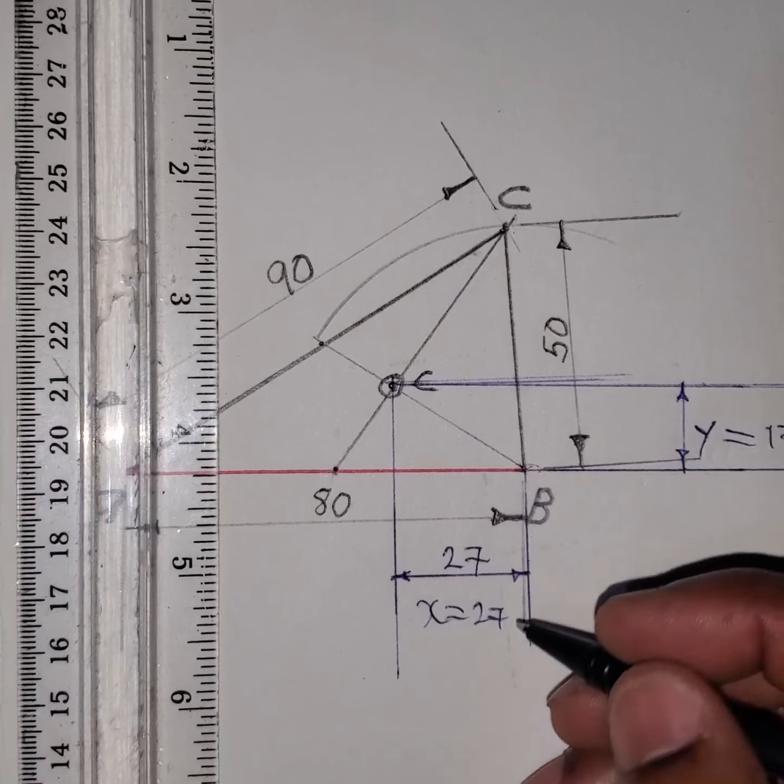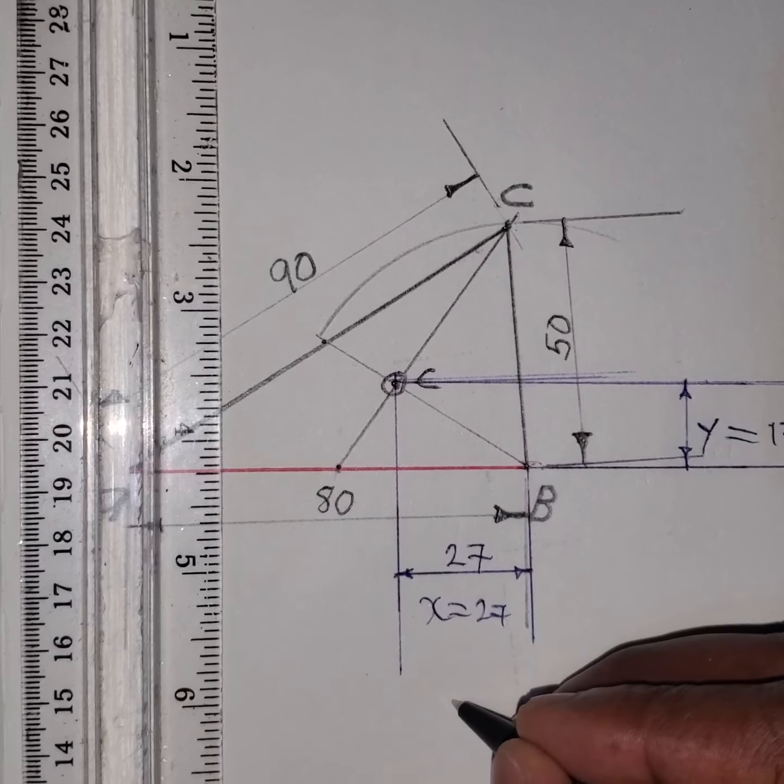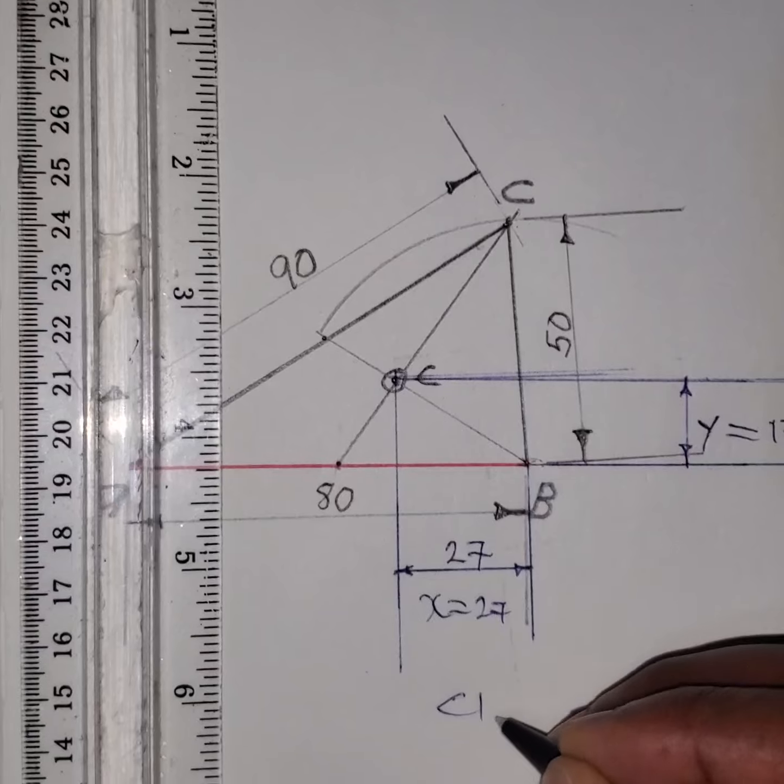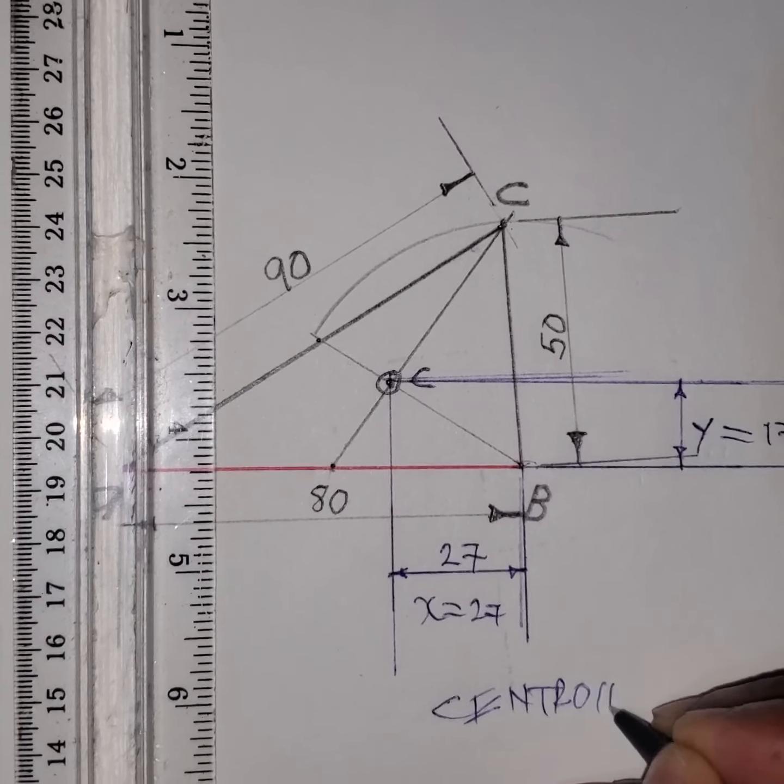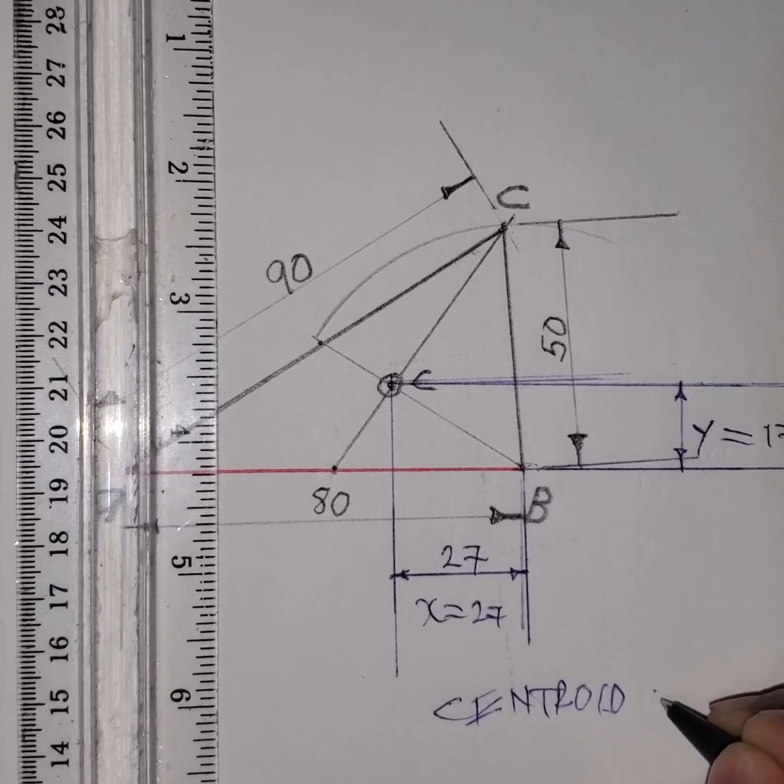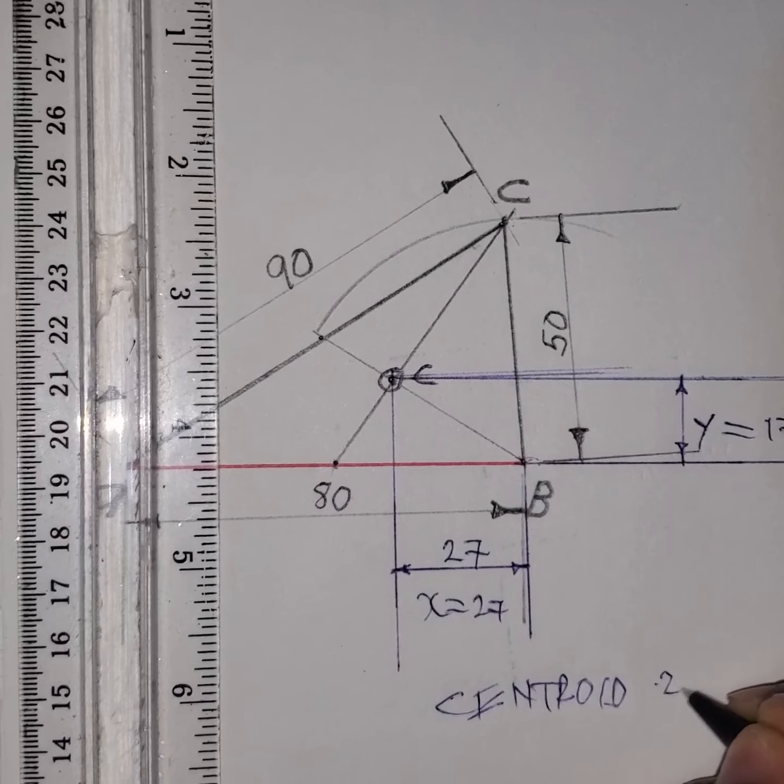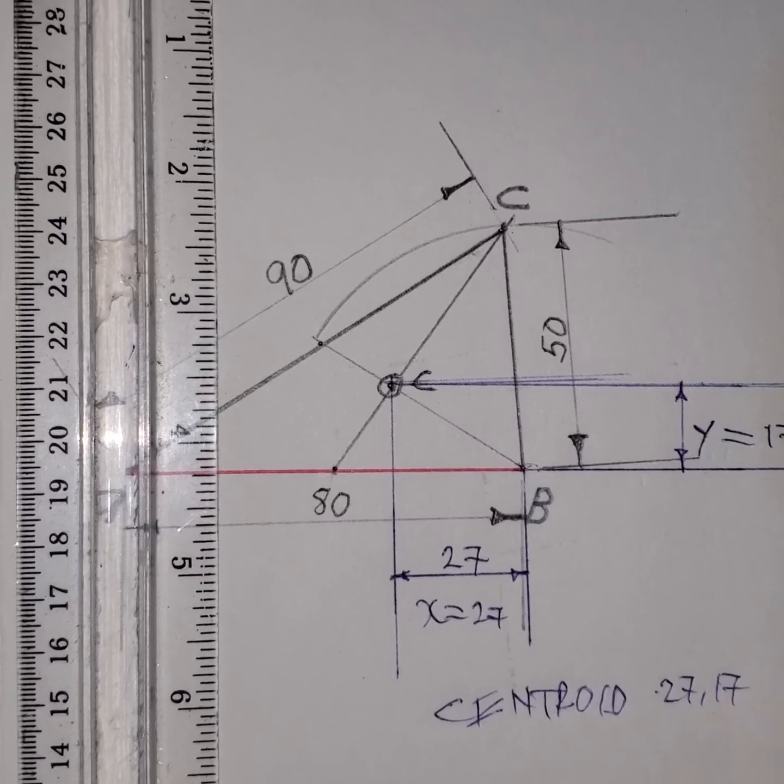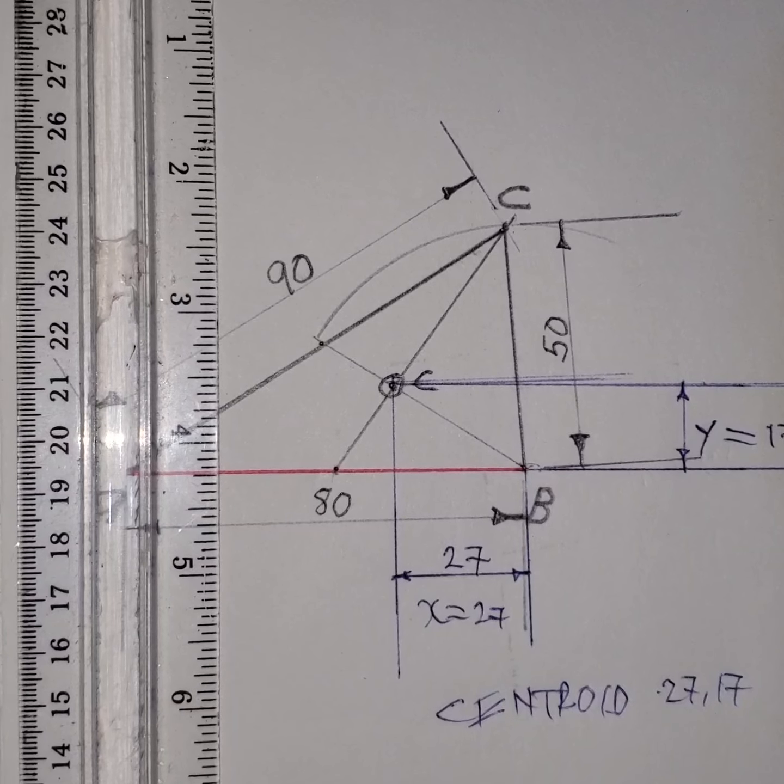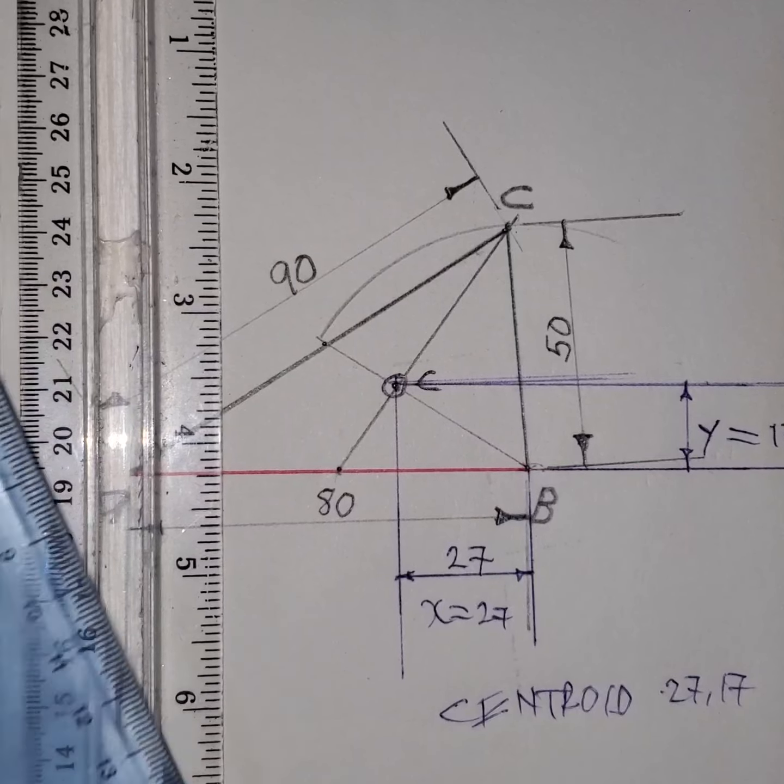So the centroid is in this locus. Centroid is located at 27, 17. Yep, 27, 17. There we go.